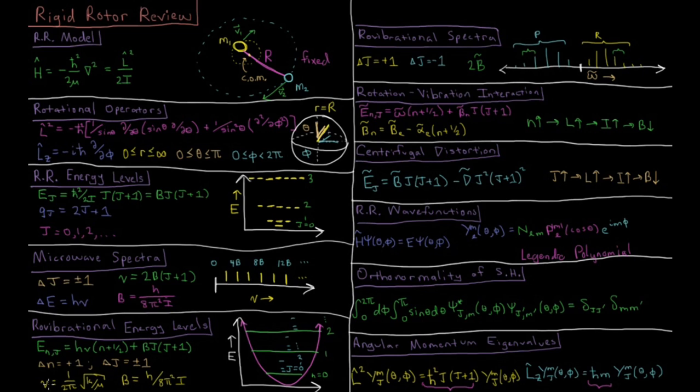These values for nu and b are the same as they are for the harmonic oscillator and the rigid rotor, which are the two models for vibration and rotation respectively.